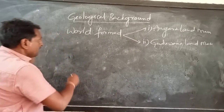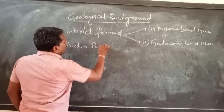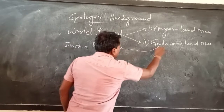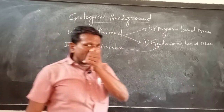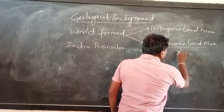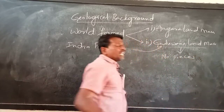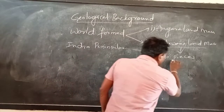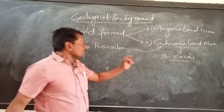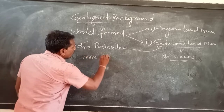India, the Indian peninsula, is located in the Gondwana land mass. The Gondwana land mass was divided into a number of pieces, and the Indian peninsula is one of those pieces.